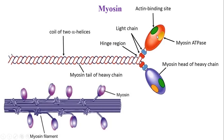Each single myosin molecule contains a head and a remaining fibrillar tail part. The head fragment is also called heavy myosin (HMM — heavy meromyosin), and the tail fragment is called LMM — light meromyosin.